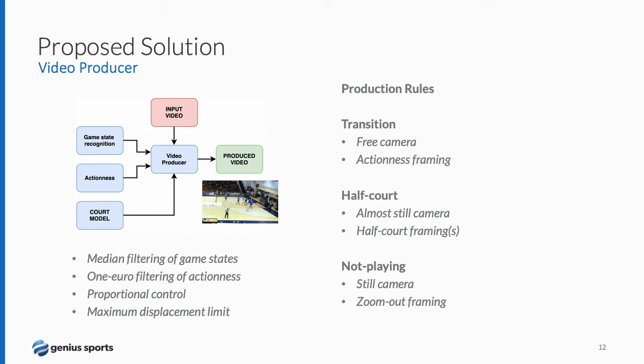Last but not least, the video producer combines information from game states, action function, and court model to perform the production. To ensure temporal consistency, a median filtering is applied to the game states. Also, to avoid high-frequency values, a one-euro filter is applied to the action function. There are three different rules of production depending on the game state. During a transition, there is a free camera trying to be centered on the action value, using a proportional control and always obeying a maximum displacement limit. During a half-court, we have an almost-still camera localized in one of the half-court defined frames. And finally, during a not-playing state, we have a totally still camera placing the zoom-out framing.